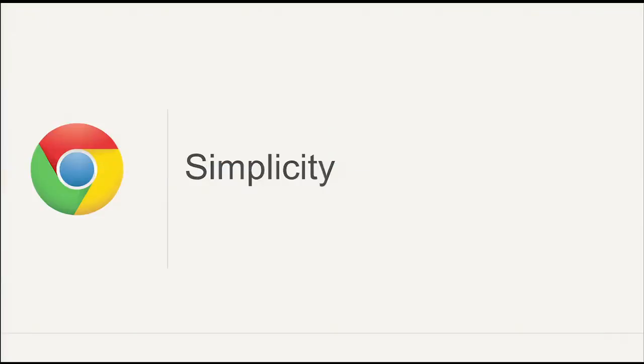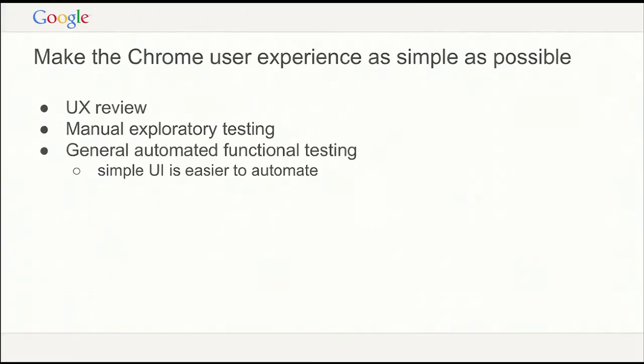The next thing is simplicity — making the Chrome user experience as simple as possible. Some of these things are not really related to automation, but they provide the big picture. We do UX reviews and manual exploratory testing. But we also found that automated testing actually promotes simple UI — if an automated test is very difficult to write, that's probably a problem with the actual UI. So if it's simple to write a test, the UI is probably simple as well.